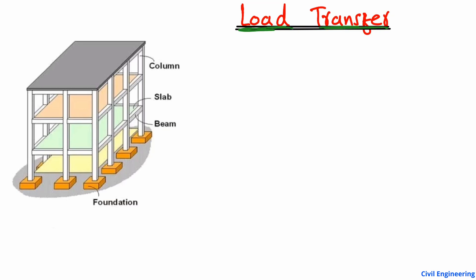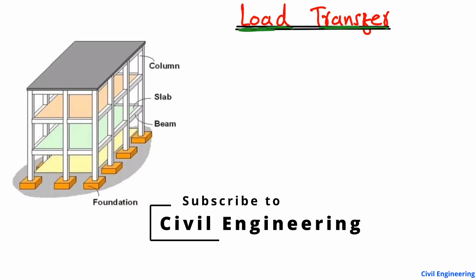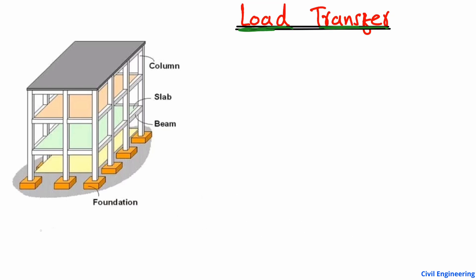We will look at how load transfer occurs in the RC frame structure, or reinforced concrete frame structure. I'm going to explain this with the help of a clear example so it will be easier to understand. A frame structure means that it has beams, columns, footing, and also the slab — such a structure is known as a frame structure.